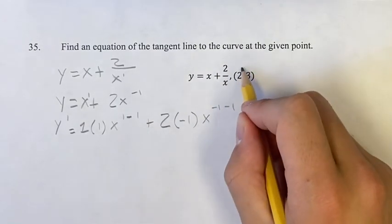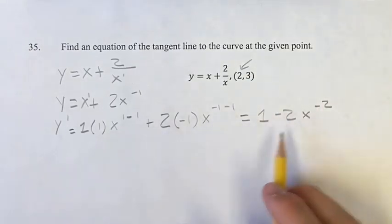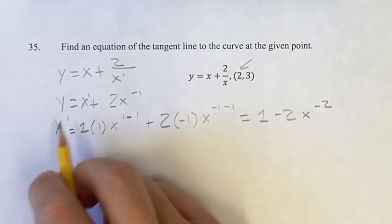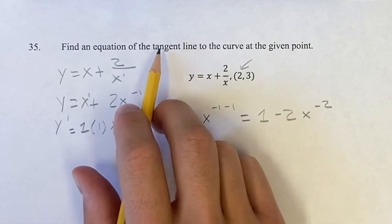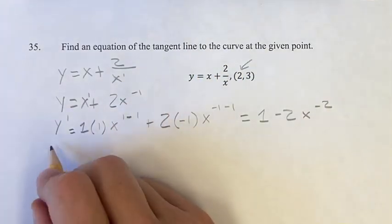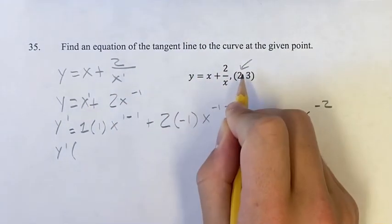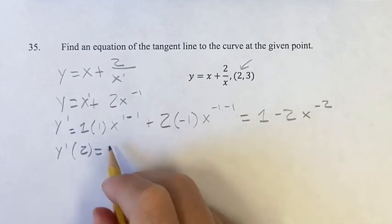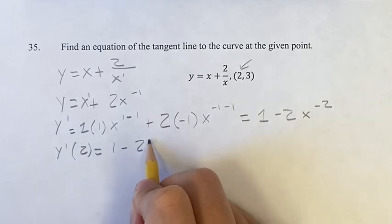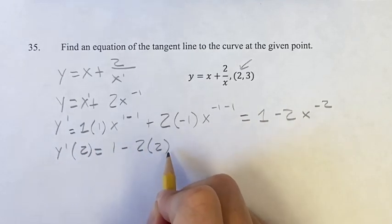Now if we plug in 2 for x, we'll find it at this point, and the derivative at this point is going to be the same as the slope of the tangent line at that point. So y prime of x equals 2, is equal to 1 minus 2 times 2 to the negative 2.